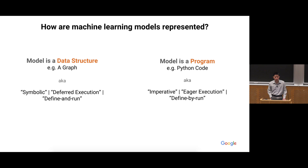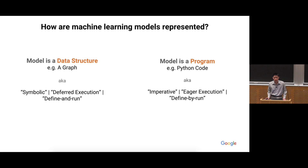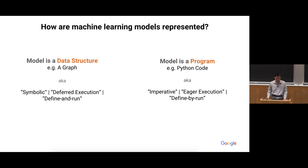The second way to define a machine learning model is to write it as a program — those lines of code will actually do the computation on either the CPU or GPU. The first paradigm is also called symbolic execution or deferred execution, and the second one is also called eager execution or imperative execution. So the question is whether TensorFlow is the first or the second paradigm. The answer is both. If you'd asked half a year ago, the answer would have been only the first, but in the latest version of TensorFlow we support both modes.